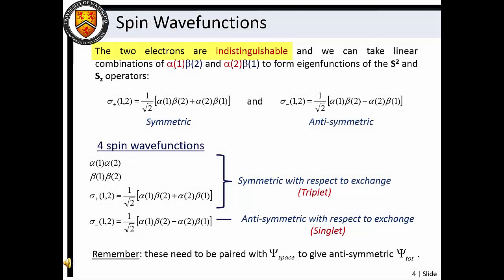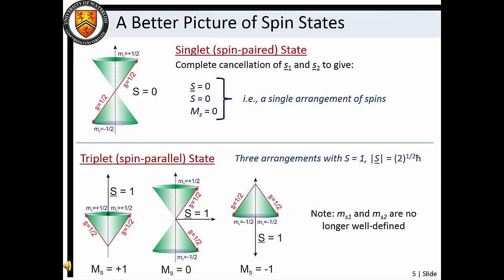Owing to the fact that the two electrons are indistinguishable, we can take linear combinations of the two final spin wave functions to yield one symmetric function and one anti-symmetric function. This gives us a total of four spin wave functions, three of which are symmetric with respect to exchange of the electrons and one that is anti-symmetric with respect to exchange. This is the origin of our singlet and triplet terminology. We can also represent this concept of singlet and triplet spin states diagrammatically.